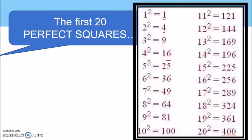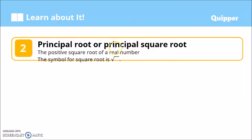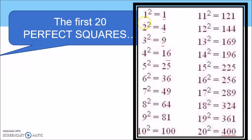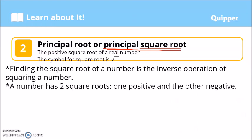With that in mind, we can now discuss the principal square root of a number. Finding the square root of a number is the inverse operation of squaring a number — it is the reverse. When we square a number we get the perfect square; conversely, finding the square root starts with the perfect square and gives us back the original number. Let's look at an example.